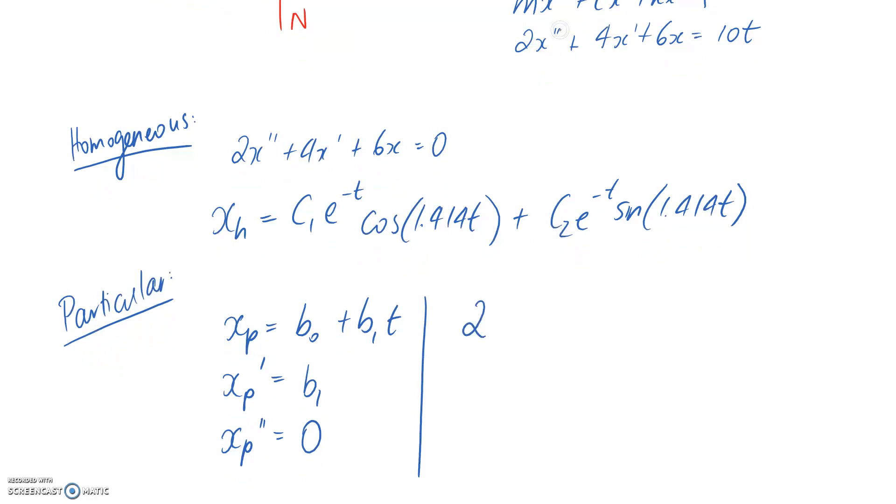Let's substitute all of this information back up into this equation here. So we're going to get two times the second derivative, which is zero, plus four times the first derivative, which is b1, plus six times the normal equation. And all of this has to be equal to our right hand side, the non-homogeneous bit.